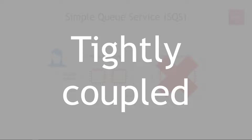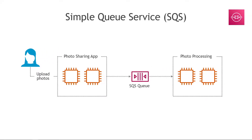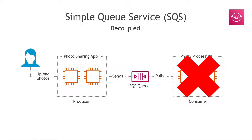This is an example of a tightly coupled architecture. Instead, we can decouple the main components and insert a queue in between. On the left we have a producer that sends things to the queue — there could be many producers. On the right, a consumer periodically polls the queue for new messages, picks up a photo to process, processes it, and deletes the message from the queue. If the processing service goes down, all messages stay in the queue and are ready to be picked up when it comes back online.